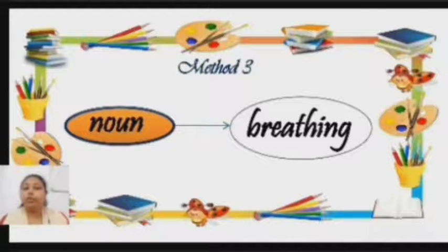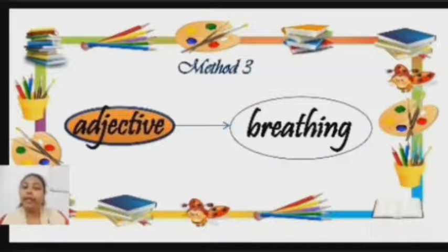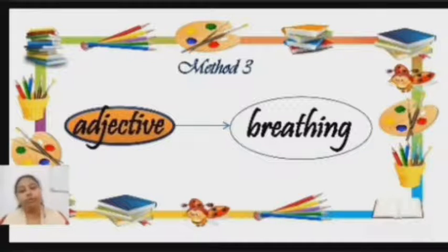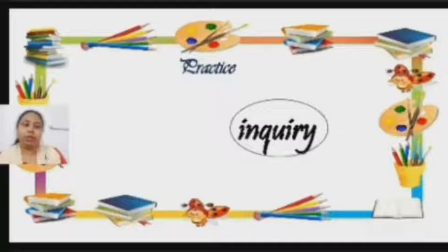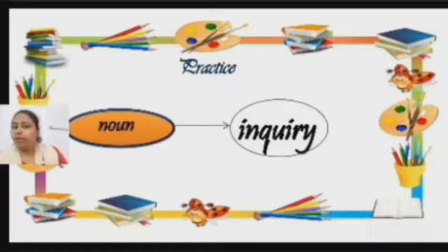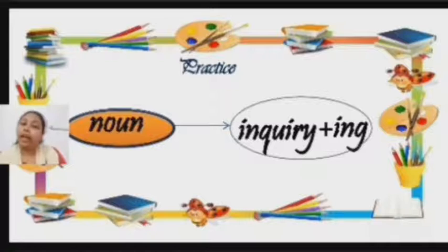But you should not get confused between these adjectives and the verbs which end in '-ing'. They are the continuous form of verbs. Now let us practice with one more word. The word is 'inquiry'. This is a noun, so I am going to add '-ing' to this word, and it becomes 'inquiring'.